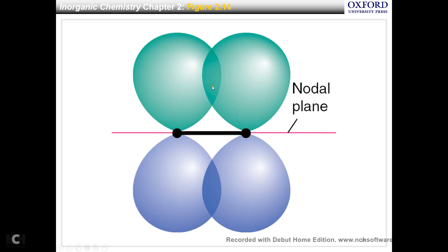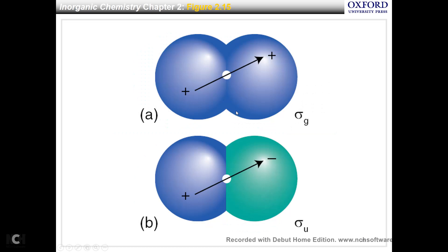This is constructive interference, and this is constructive interference. The reason you see one nodal plane here is because it's inherited from the original 2P atomic orbital. In a 2P orbital, you have such a nodal plane. You're just putting this nodal plane together — it's still one nodal plane for this P orbital and this P orbital. Green and green — constructive interference. Blue and blue — constructive interference. Therefore, this is a pi bonding orbital.